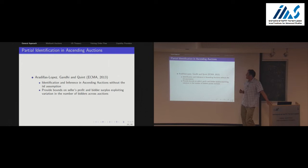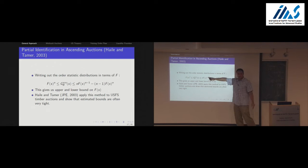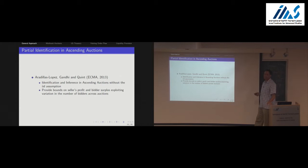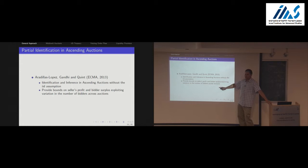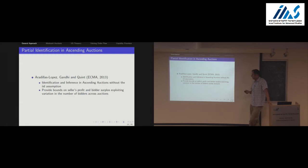That paper has been generalized by Andres Aradillas-Lopez, Amit Gandhi, and Dan Quint to ascending auctions without the IID assumption, at the cost of requiring variation in the number of bidders across different auctions. The basic argument is the same — construct bounds, prove sharpness, use them in counterfactuals — but the bounds are less easy now. The identifying assumption is exogenous variation in N, or an instrument isolating that variation.